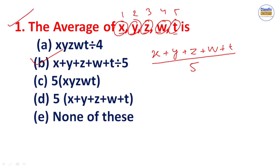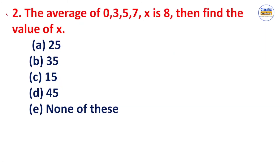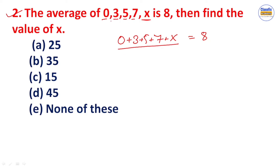Very simple. Here we solve number two: the average of 0, 3, 5, 7, and x is equal to 8. We need to find the value of x. We know the average is 8, and we have 5 numbers — so we need to add all numbers and divide by n. Here n is 5, since we have 0, 3, 5, 7, and x — that is 5 numbers.